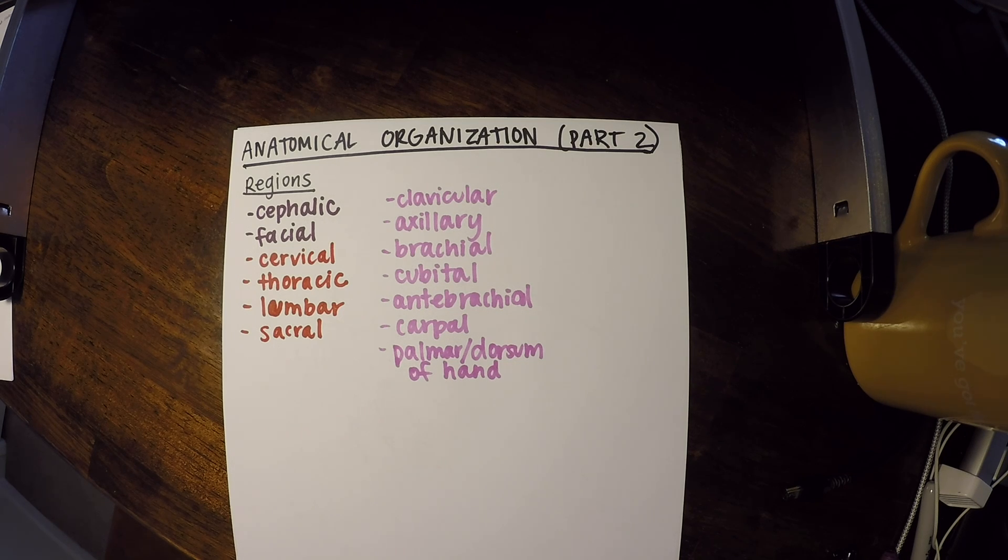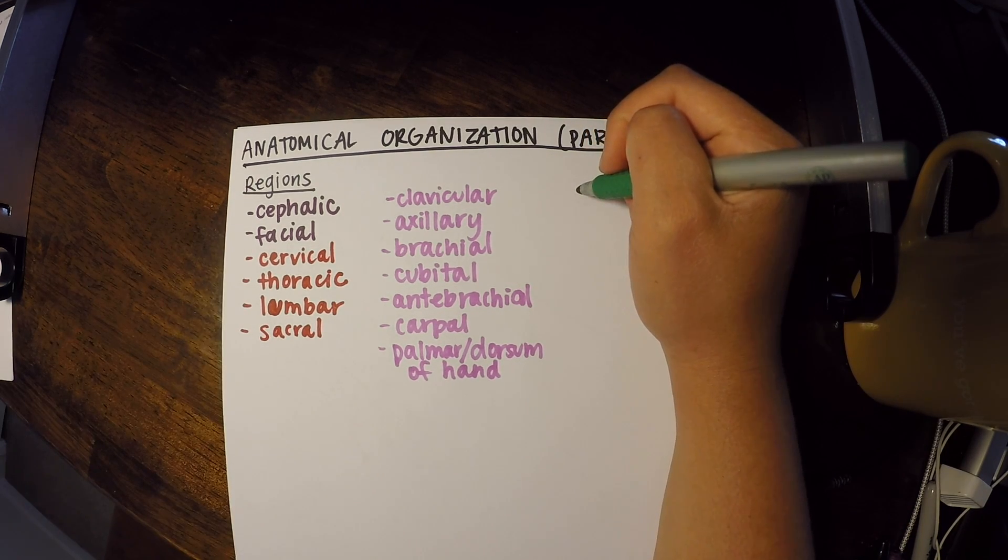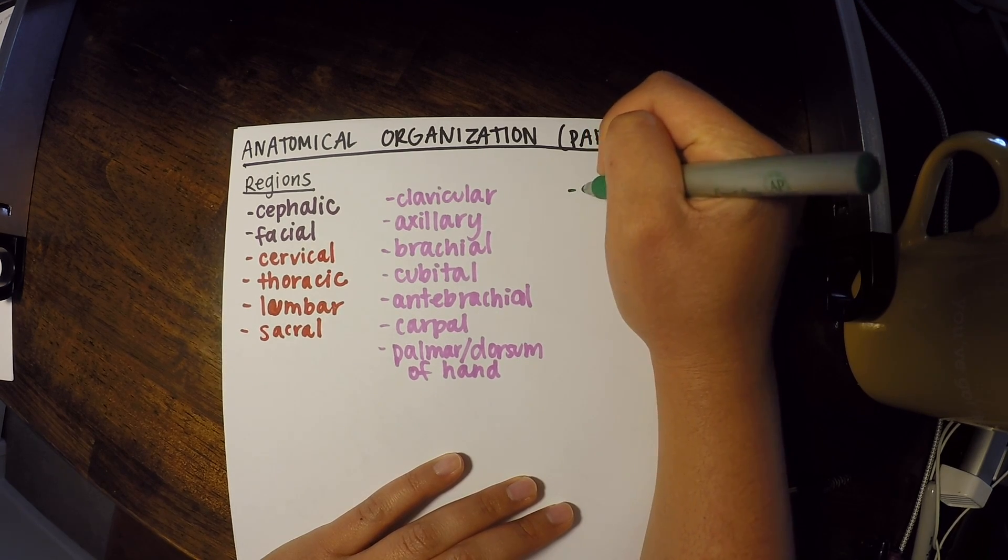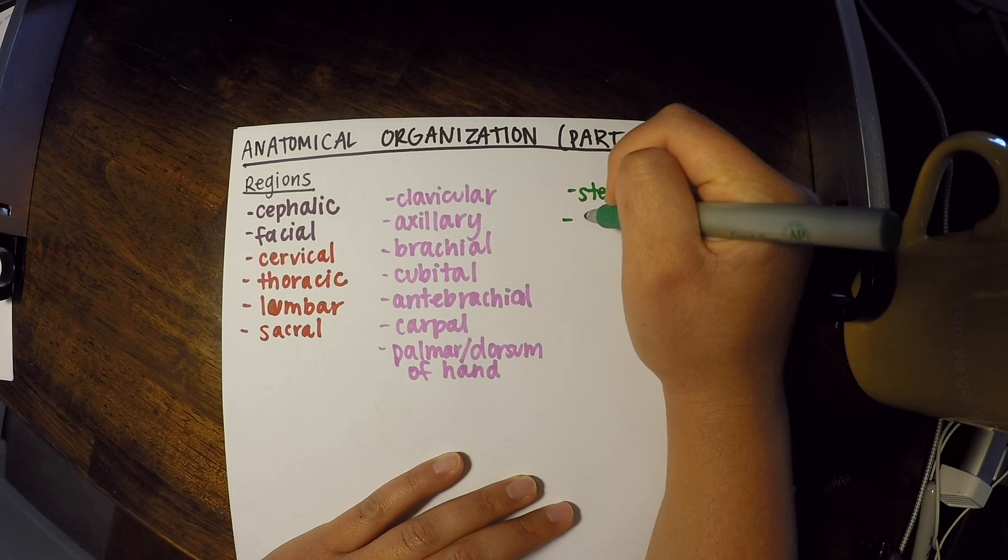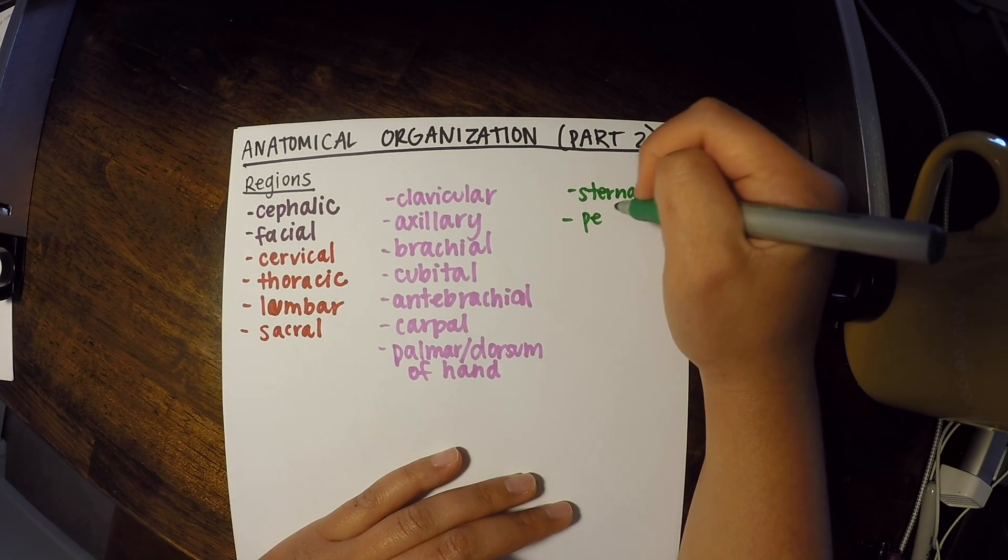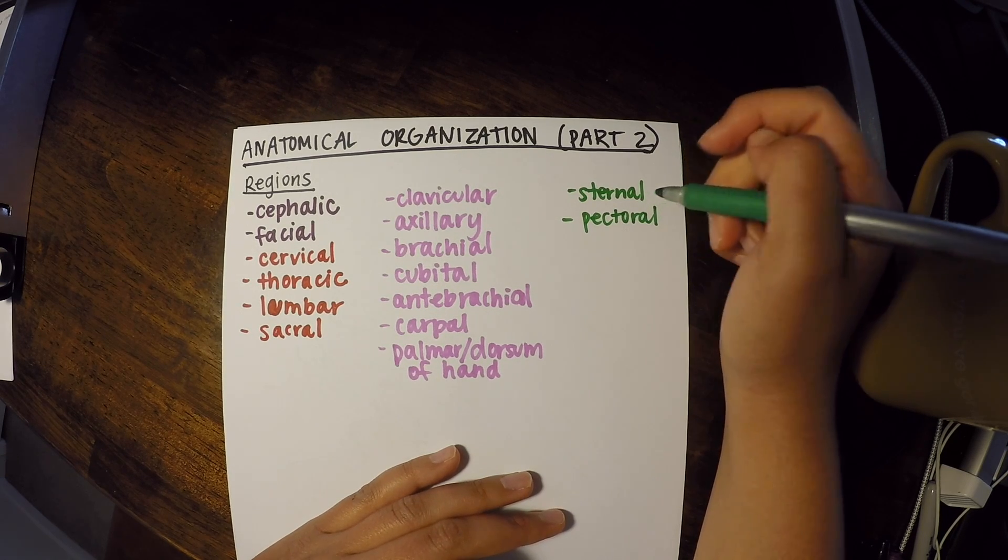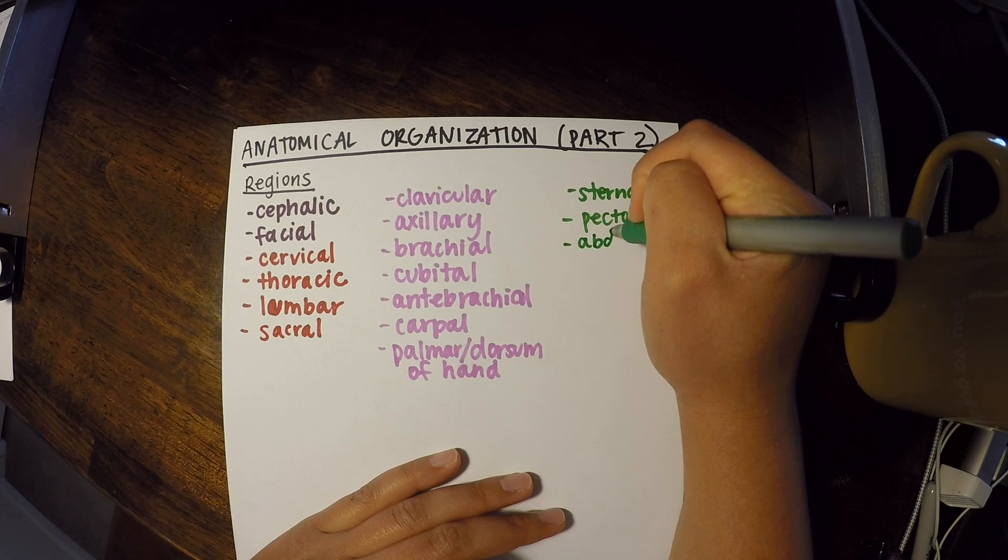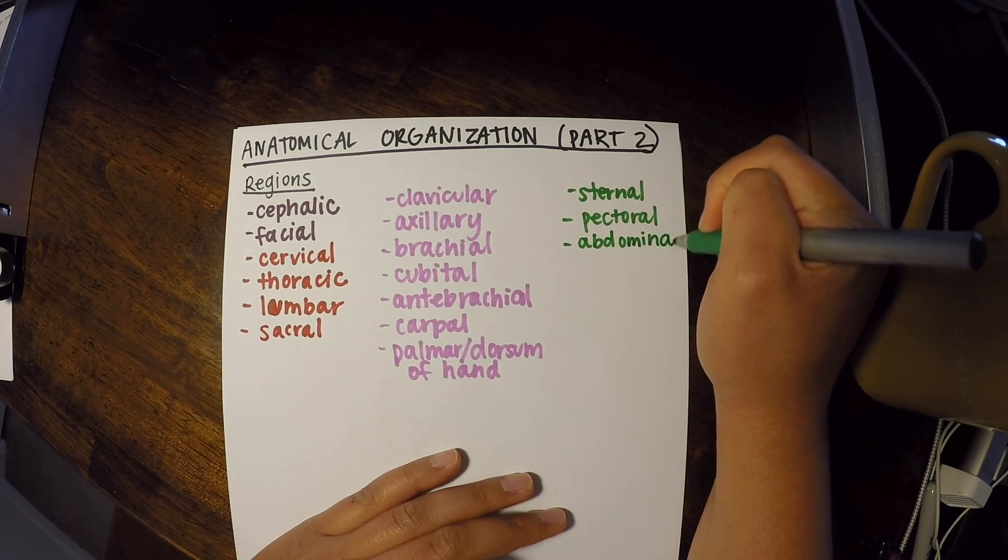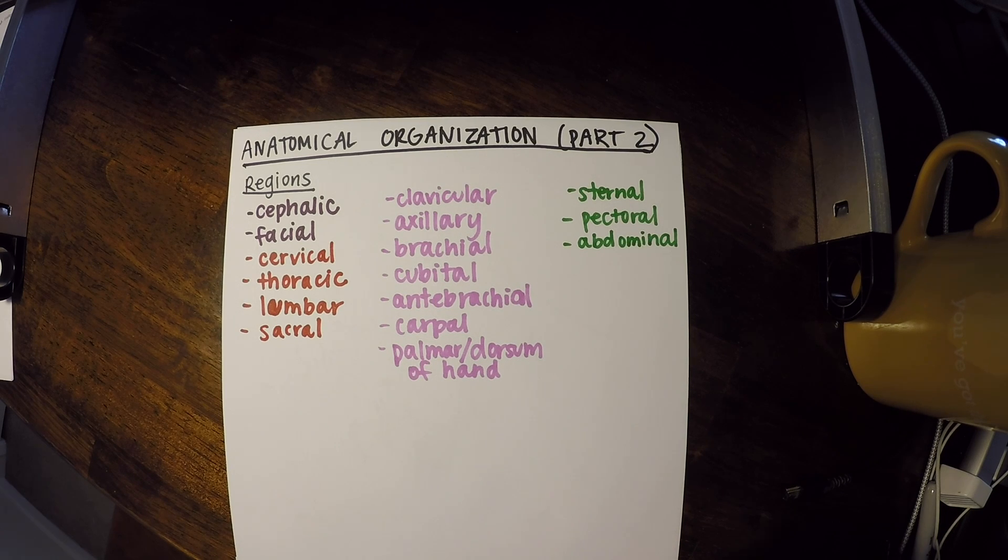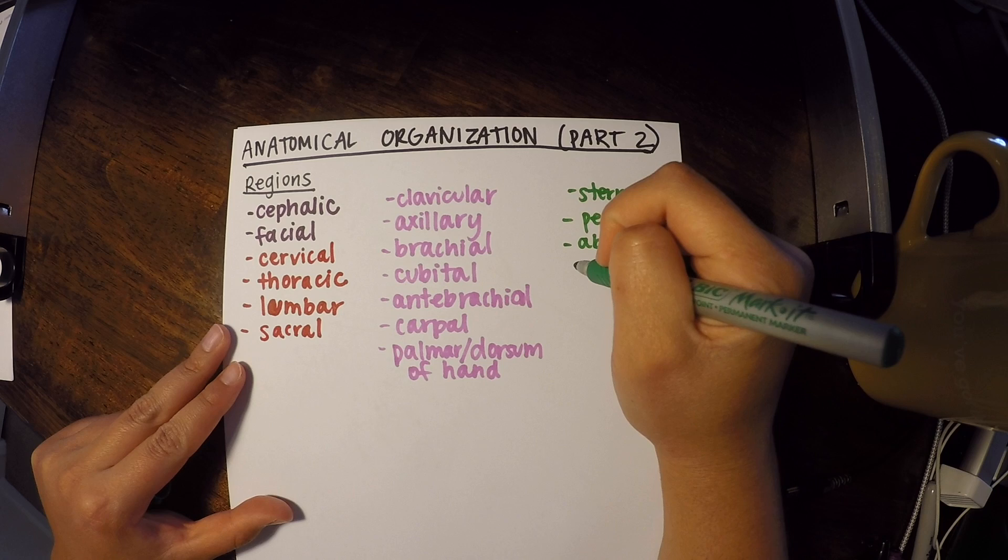Now in the center region, we have a few other things as well. We have the sternum, which is right in the center between your ribs in the front. Pectoral is around where your pectoral muscles are, or your pecs as they're commonly known. Abdominal means your belly or stomach area. Now that's a little bit misleading because your stomach is actually very superiorly or very high up in your belly area. But abdominal is what we use for that whole commonly known as belly region.